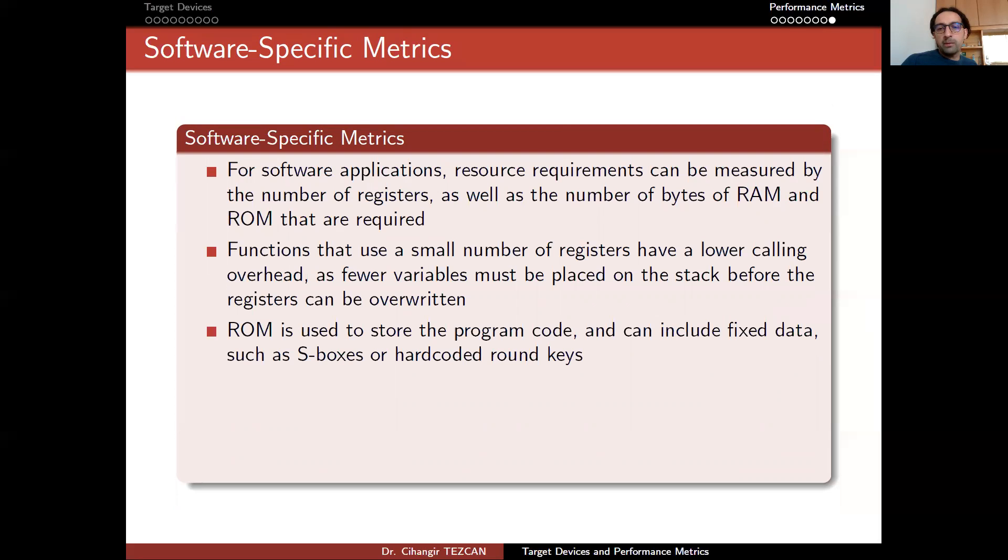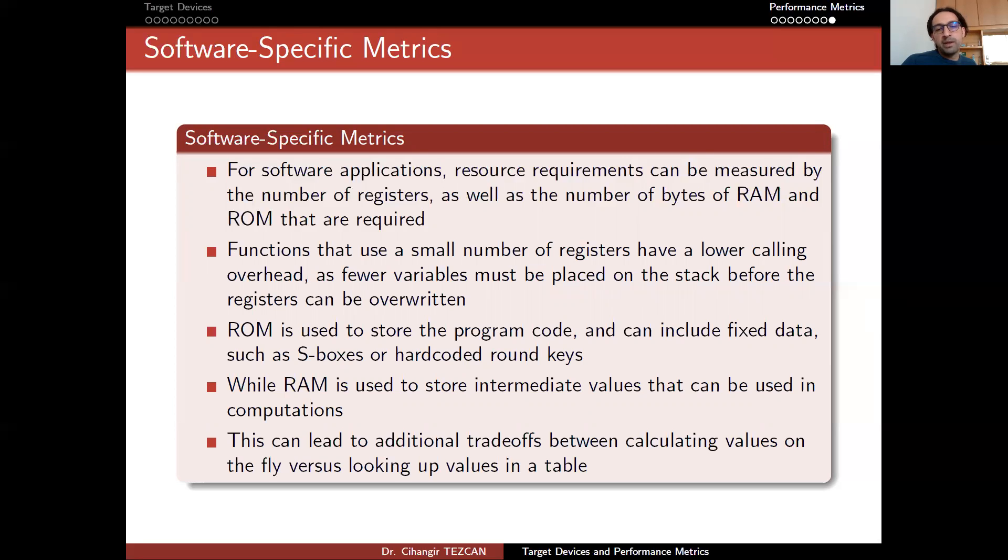ROM is used to store the program code and can include fixed data, such as S-boxes or hard-coded round keys, while RAM is used to store intermediate values that can be used in computations. This can lead to additional trade-offs between calculating values on the fly versus looking up values in the table. As you can see, it's very hard to do a lot of things in this standardization process because it's hard to compare hardware and software implementations. But this is why we're having the workshops and there are a lot of benchmarks where the crypto community is trying to optimize the software and hardware implementations of these candidates.